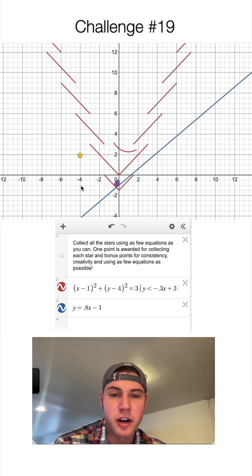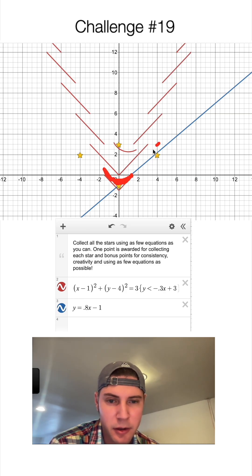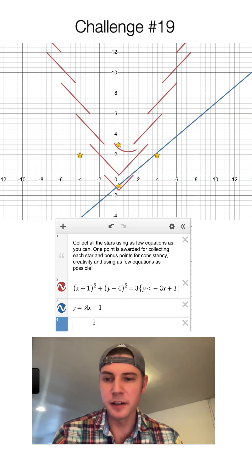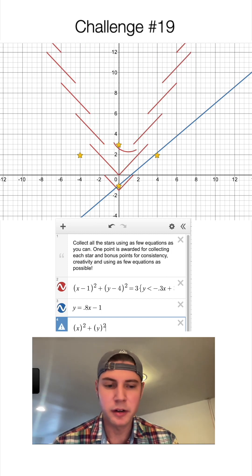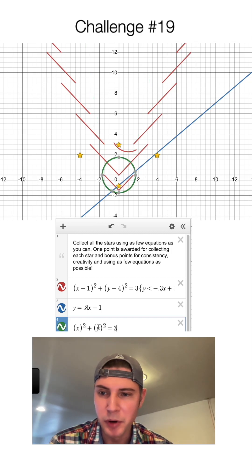So that hits these two other stars, so now we only have this one last star. So I just need to put a ramp right here that will then kick the marbles up to there. We'll do another circle like we did—x squared plus y squared and we'll say equals three again.